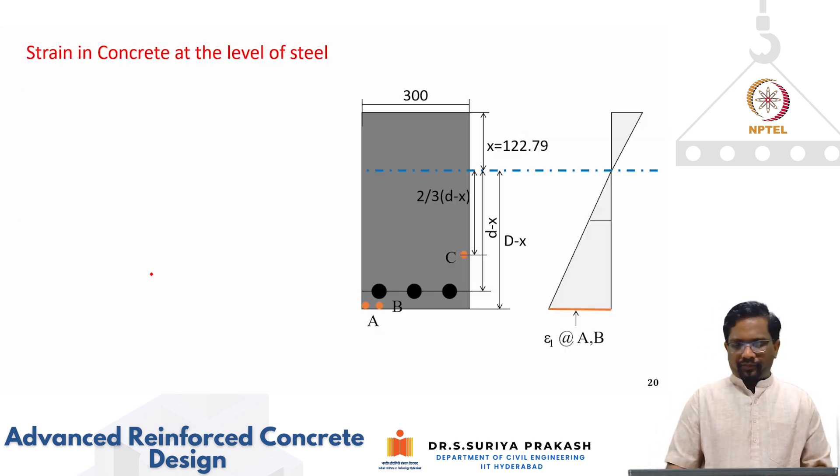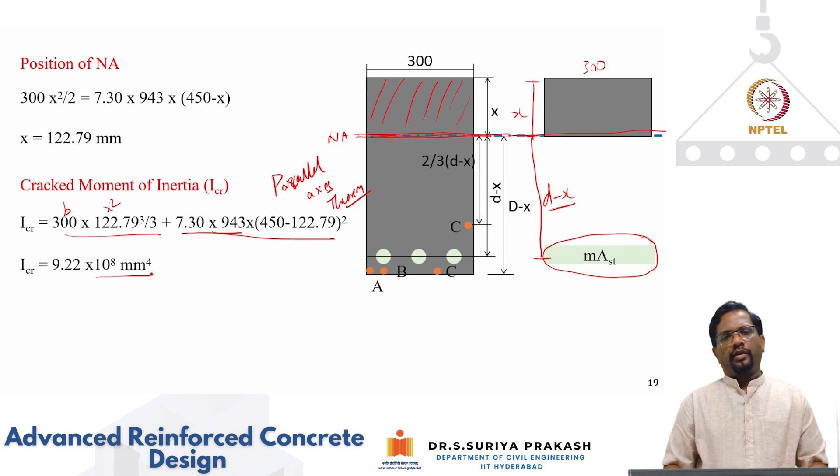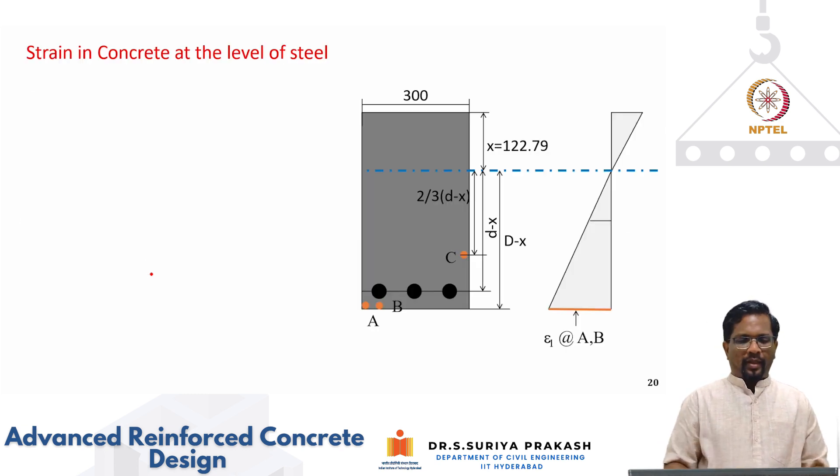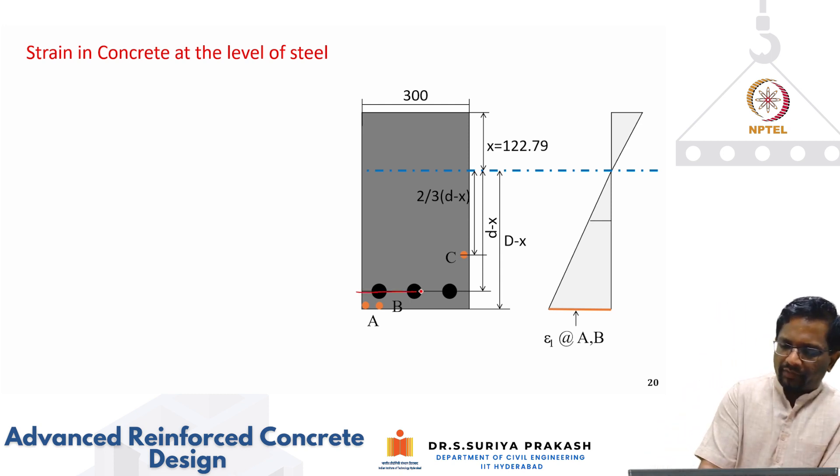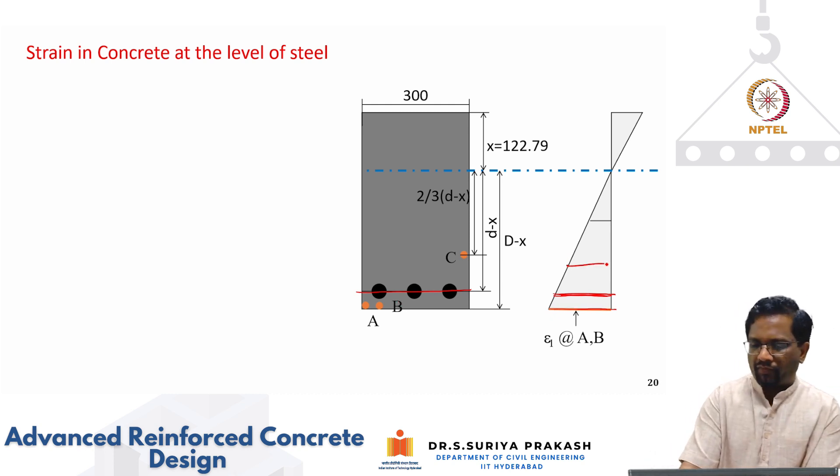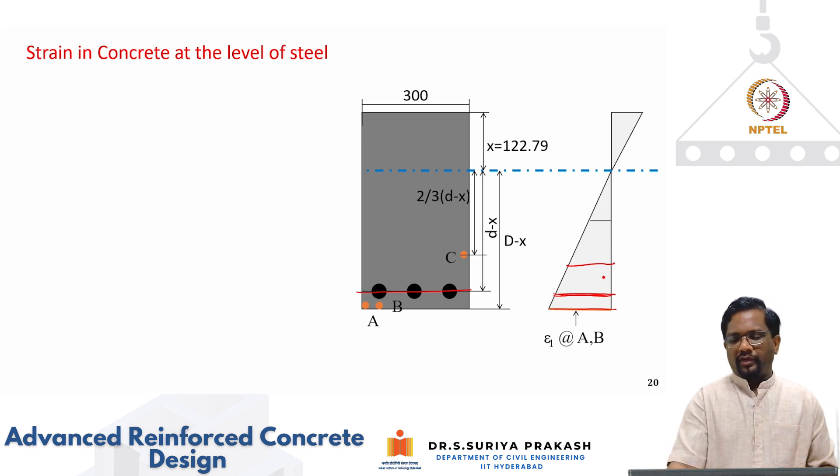You got neutral axis depth and cracked moment of inertia. Let us calculate what is epsilon 1. Strain in the concrete at the level of steel. That means this location, we are measuring what is the strain. If I measure this, then I can extrapolate and get epsilon 1 at A and B. Similarly, at C also. Let us calculate this. What is the strain? Epsilon C is nothing but FCS by EC.